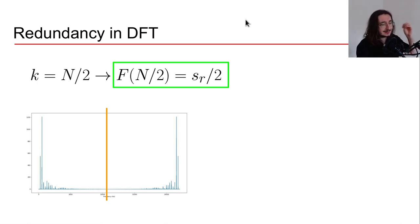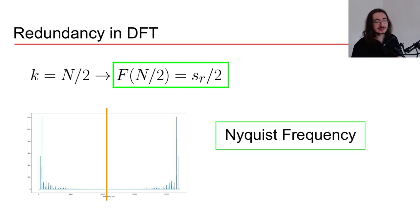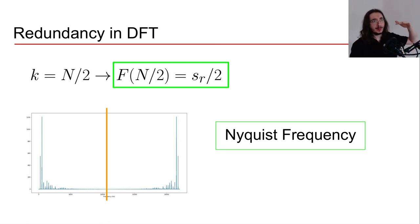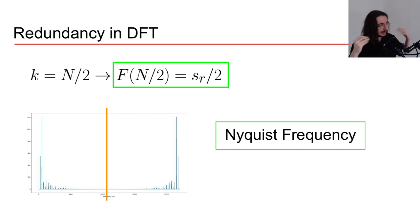This central frequency — the sampling rate divided by two — is called the Nyquist frequency. It's the threshold above which we cannot reconstruct a digital signal back to its original analog form without introducing aliasing. If you want to brush up on aliasing and the Nyquist frequency, check out the referenced video.